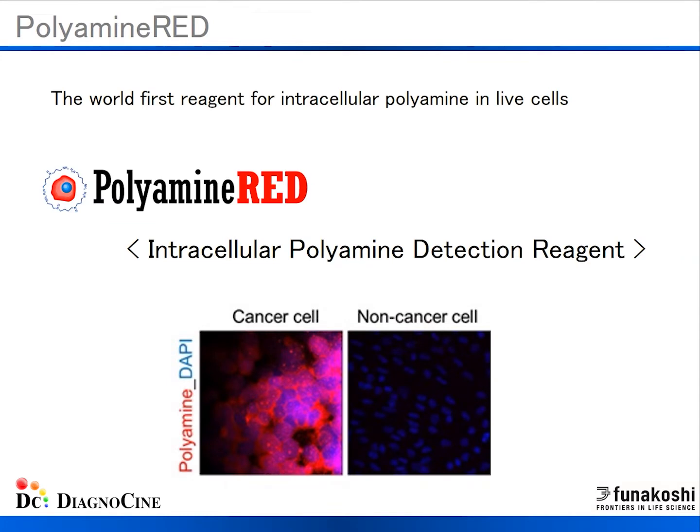Traditionally, the detection of polyamines requires analytical methods such as HPLC with polyamine standards. There has never been an easy and simple detection reagent for polyamines in cells up to this point. Our new reagent, polyamine red, is the world's first reagent for imaging intracellular polyamines, specifically in live cells.